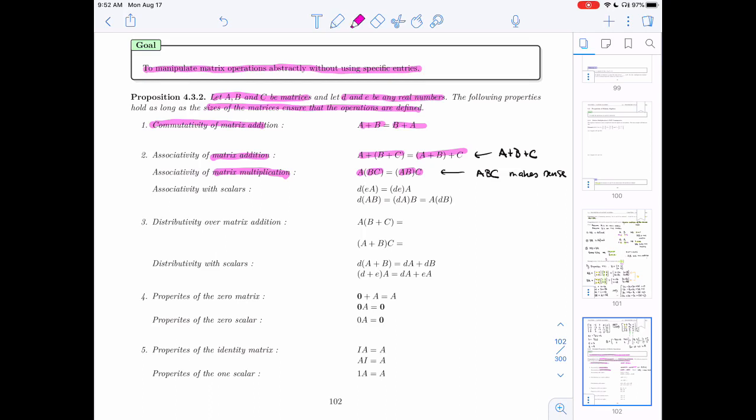And also, multiplication with scalars is associative. So whether we have two scalars like you have here or two matrices like you have here, whether you multiply E and A first or D and E first, whether you multiply A and B first or D and A or D and B, all of these things would actually give you the same answer.